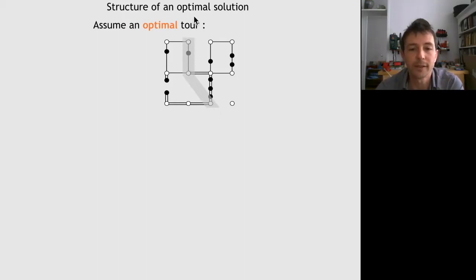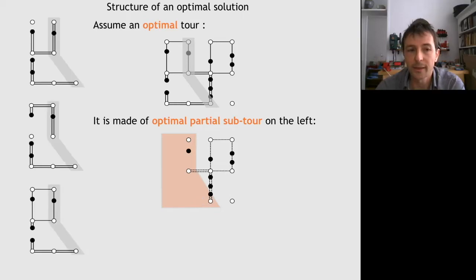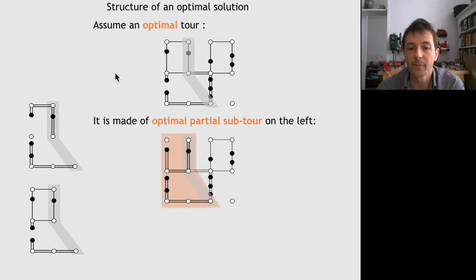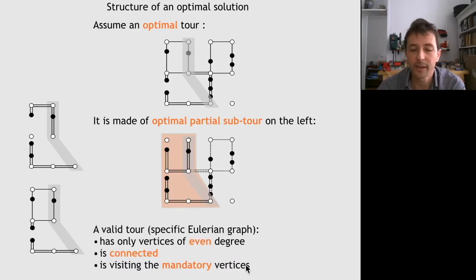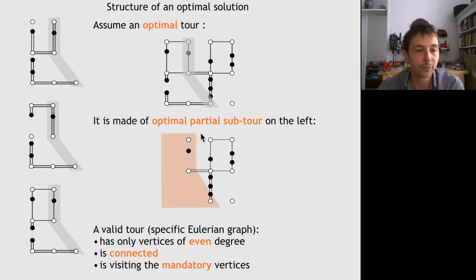To see that, you can split the problem with this gray separator. The subtour to the left of this separator must be an optimal partial subtour if this solution is to be an optimal tour. I can get rid of this left part and plug a number of alternative subtours. For instance, this one fits nicely because it satisfies the property: the parity of the degree is even, and we are left with a single connected component visiting all the mandatory vertices.